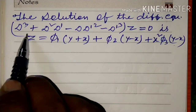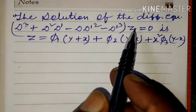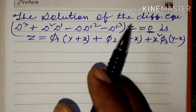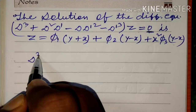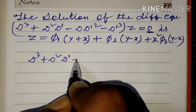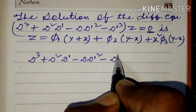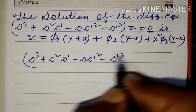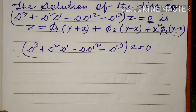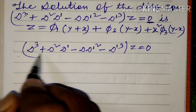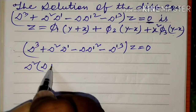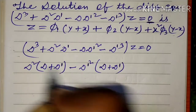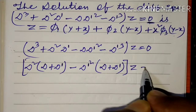सबसे पहले देख रहे हैं कि यह differential equation कैसा है — यह homogeneous equation है क्योंकि RHS में 0 दिया हुआ है। अब हम पता करते हैं कि यह equation reducible है या irreducible। इसके लिए equation Dq + D²D' - DD'² - D'³ z = 0 को हम factor करते हैं। D² में से D(D + D') और D'² में से D'²(D + D') निकाल लेते हैं।